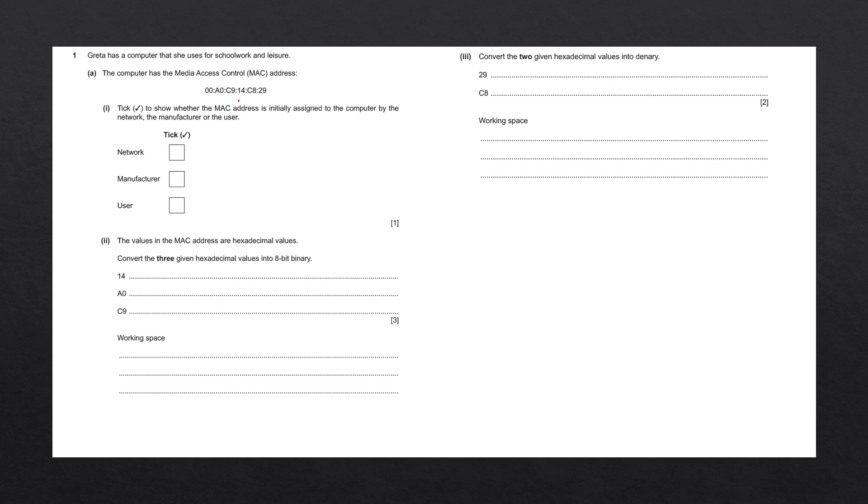So a quick recap on MAC addresses. MAC addresses are assigned to network interface controllers. Generally when devices such as computers, tablets, phones, smartwatches are manufactured, they are able to connect to the internet. A MAC address is used to identify a device on a network, so it's vital for any device that wants to connect to the internet. Generally it's going to be assigned by the manufacturer. So we can take manufacturer as the correct answer.